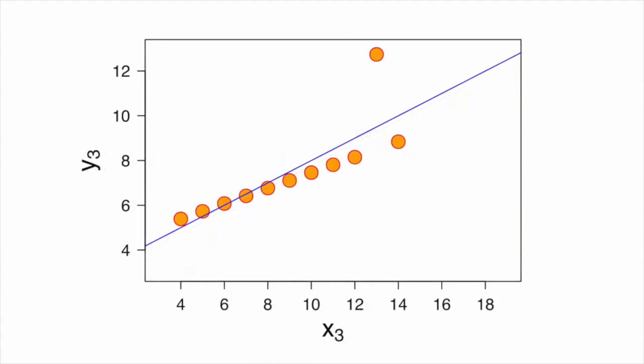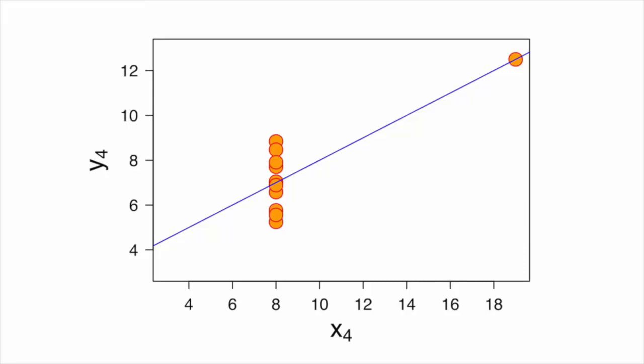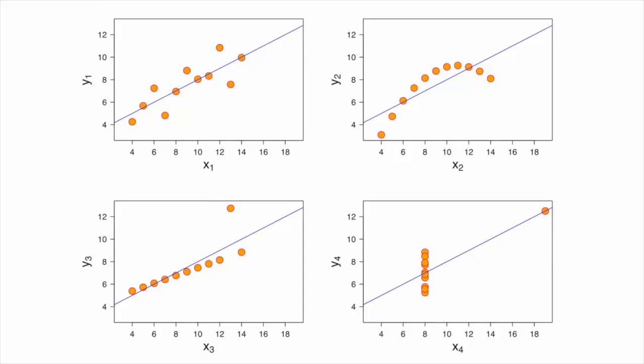The third and fourth data sets also gave rise to highly patterned arrangements of the points, with the exception, in each case, of a single renegade outlier.